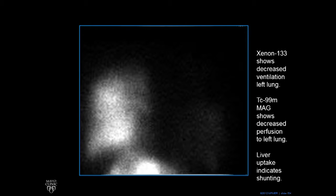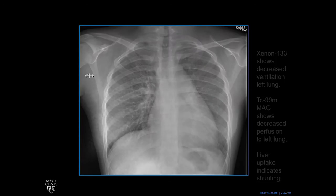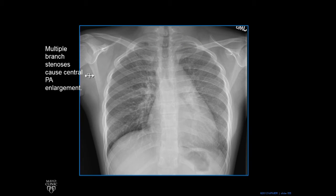This liver uptake also indicates that there's abnormal shunting — blood is, instead of going to the lungs, being detoured and making its way through other vessels. This tracer, technetium-99m MAA (macroaggregated albumin), which is a blood tracer, was going to the liver. So this person had multiple branch stenosis causing central pulmonary artery enlargement, showing up more on the left side.